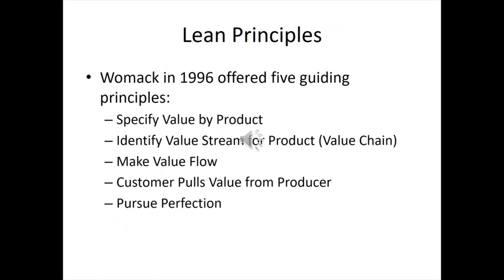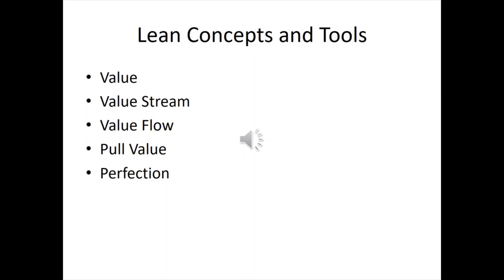Back in 1996, a guy named Womack wrote about five guiding lean principles: specify value by the product or service; identify the value stream; make that value flow through the process; don't push value onto people — wait for the customer to pull it out of you; and pursue perfection, believing there's a perfect way to do things. Closely tied to Six Sigma are lean concepts — value as benefits over cost, value stream, flow, pull, and perfection.